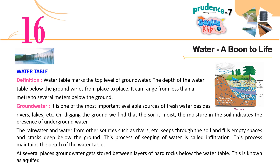Water Table. The water table marks the top level of ground water. The depth of the water table below the ground varies from place to place. It can range from less than a meter to several meters below the ground. Groundwater is one of the most important available sources of fresh water besides rivers, lakes, etc. On digging the ground we find that the soil is moist — the moisture in the soil indicates the presence of underground water. The rainwater and water from other sources such as rivers seeps through the soil and fills empty spaces and cracks deep below the ground. This process of seeping of water is called infiltration. This process maintains the depth of the water table. At several places groundwater gets stored between layers of hard rocks below the water table. This is known as an aquifer.